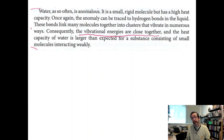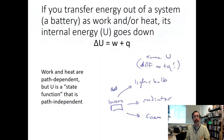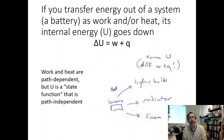Heat and work are path dependent: you can choose how much of a system's energy goes into work versus heat depending on the path you take. A great example is a battery: you can discharge it as radiant energy and heat through a light bulb, purely as heat through a space heater, or mostly as work through a fan. The total joules in the battery are fixed — you just choose the path by which they're released.